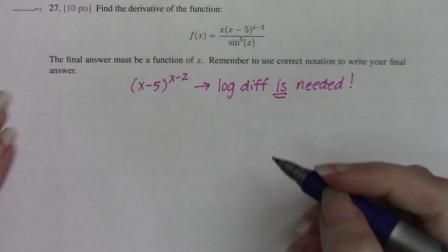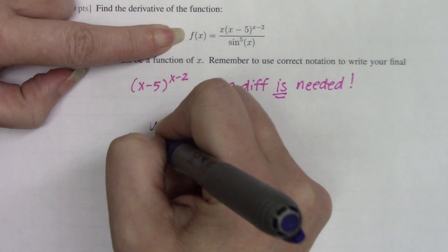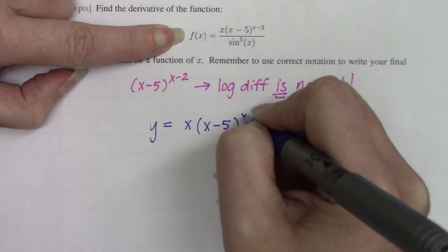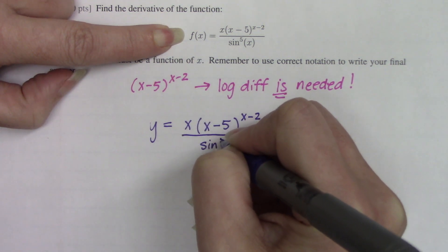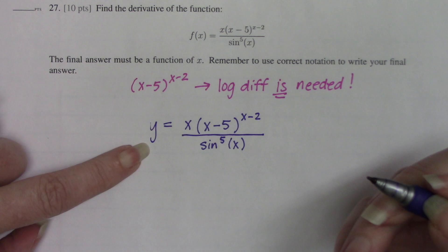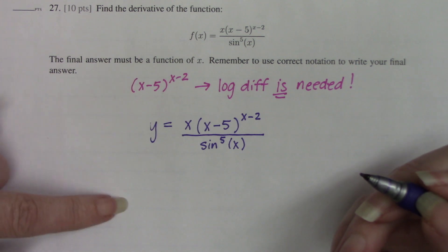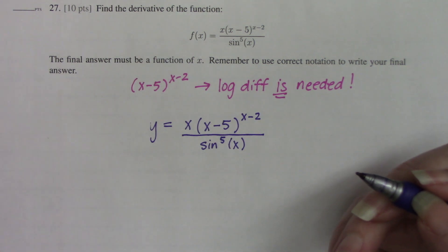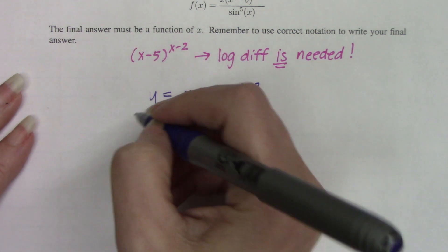Personally, I think it's easier if you rewrite the function — no matter what it's named — and call it y, because it's just a little bit cleaner for the work. When we use log diff, the first thing we're going to do is take the natural log of both sides. Trying to work on this side of the equation with f of x or h of x can get a little messy, so calling it y looks visually cleaner and neater to work with.